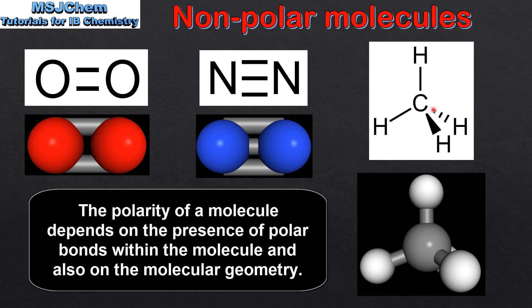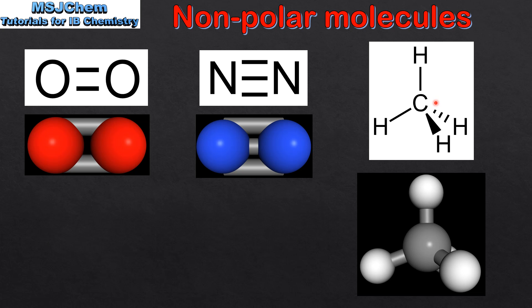Methane is composed of one carbon atom bonded to four hydrogen atoms. The carbon to hydrogen bond is a non-polar bond. This is because of the small difference in electronegativity between carbon and hydrogen. Because methane does not contain any polar bonds, it's a non-polar molecule.